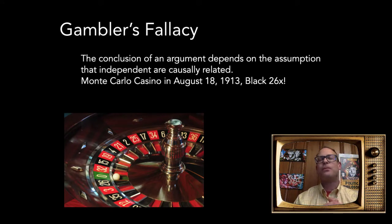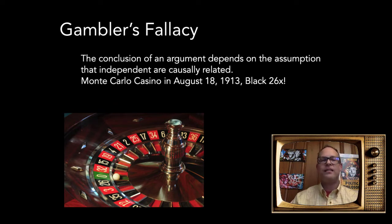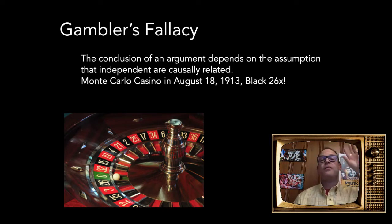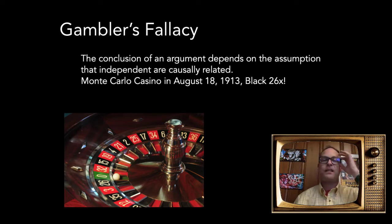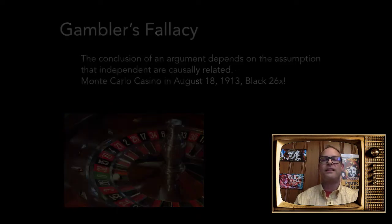The gambler's fallacy also comes up in sports: 'They've won five in a row, they're due to lose the sixth.' If you assume these are independent events, every game being independent, that's a fallacy. Of course, you could argue sports involve sequential events — durability of athletes, injuries, and so on — but the fallacy applies when independence is assumed.